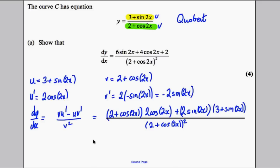OK, so it's quite a large formula here. Let's just multiply this out. This multiplied by this would give me 4 cos of 2x. This multiplied by this would give me 2 cos squared of 2x.